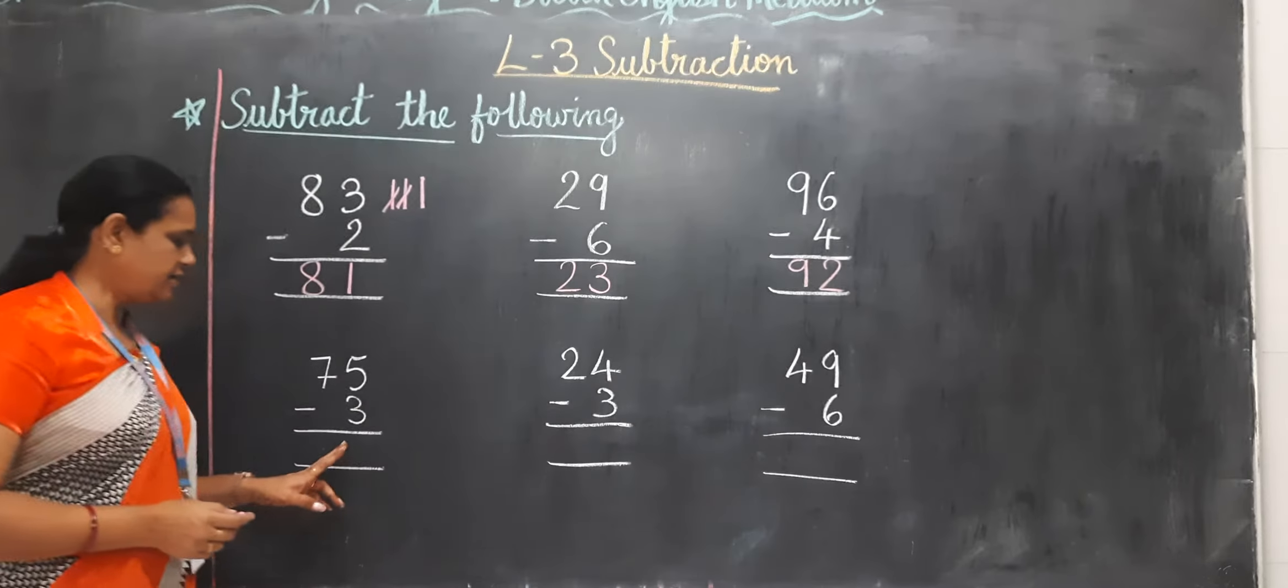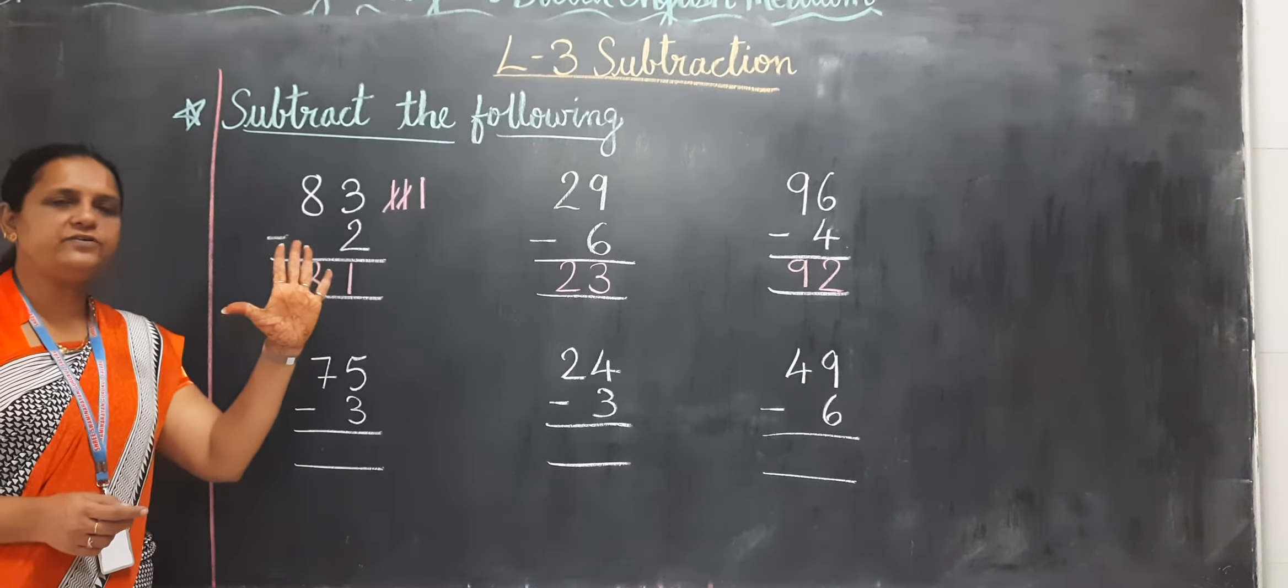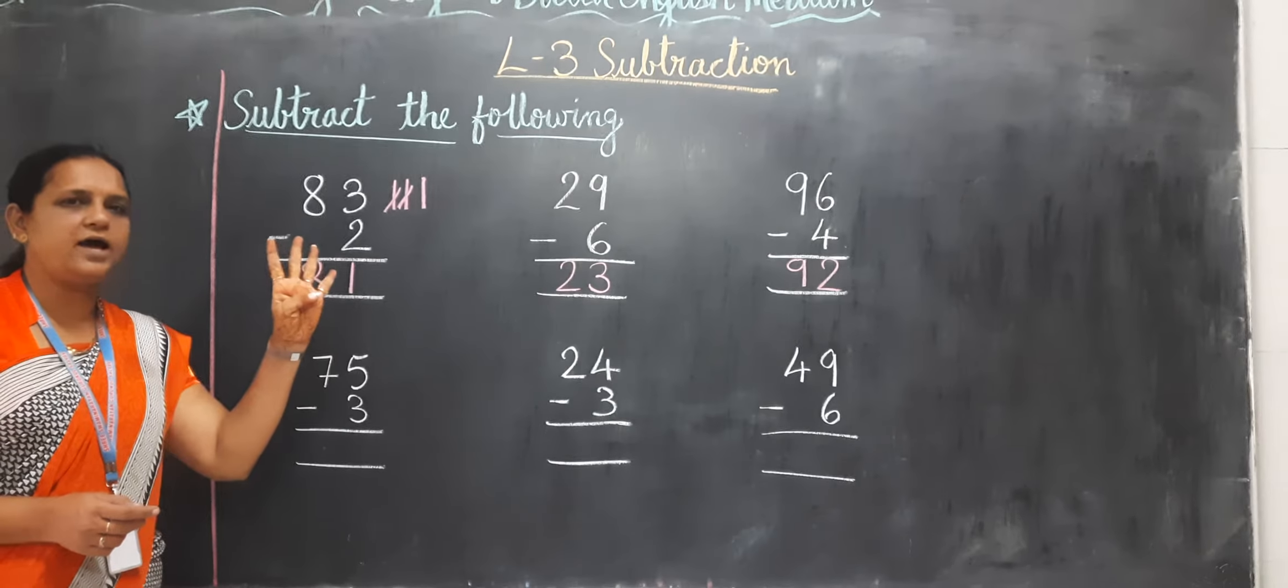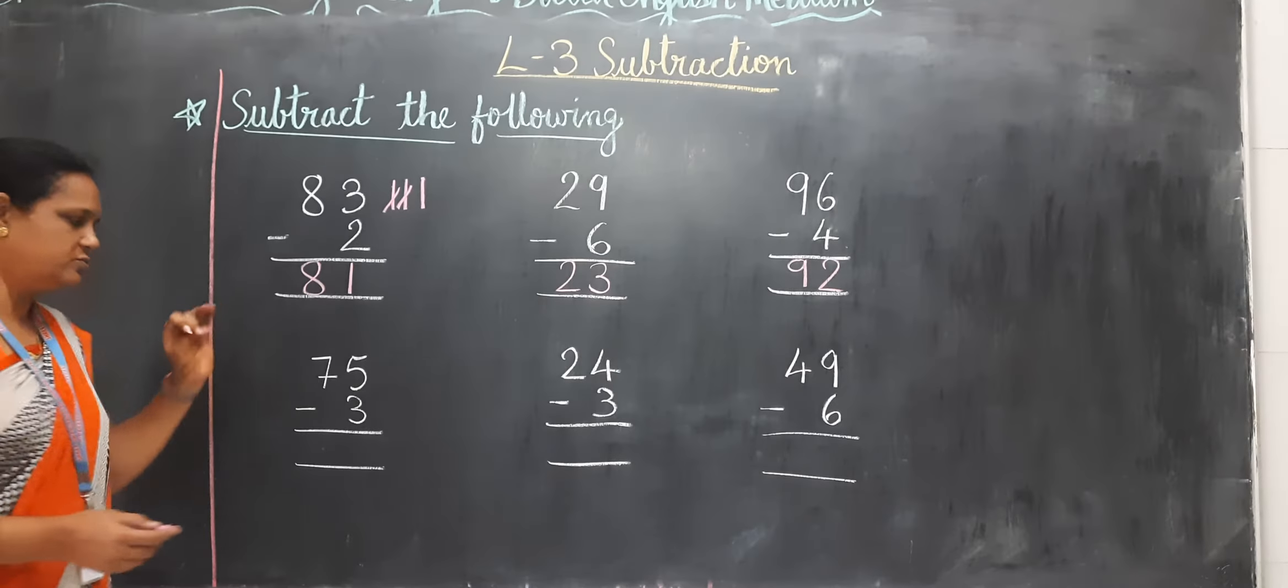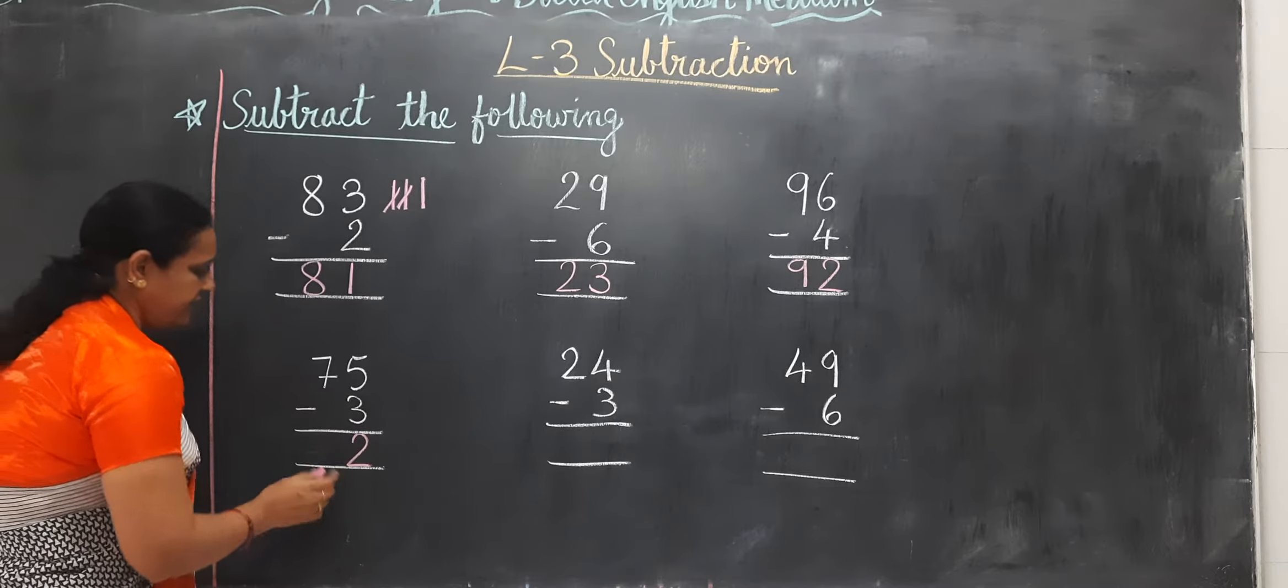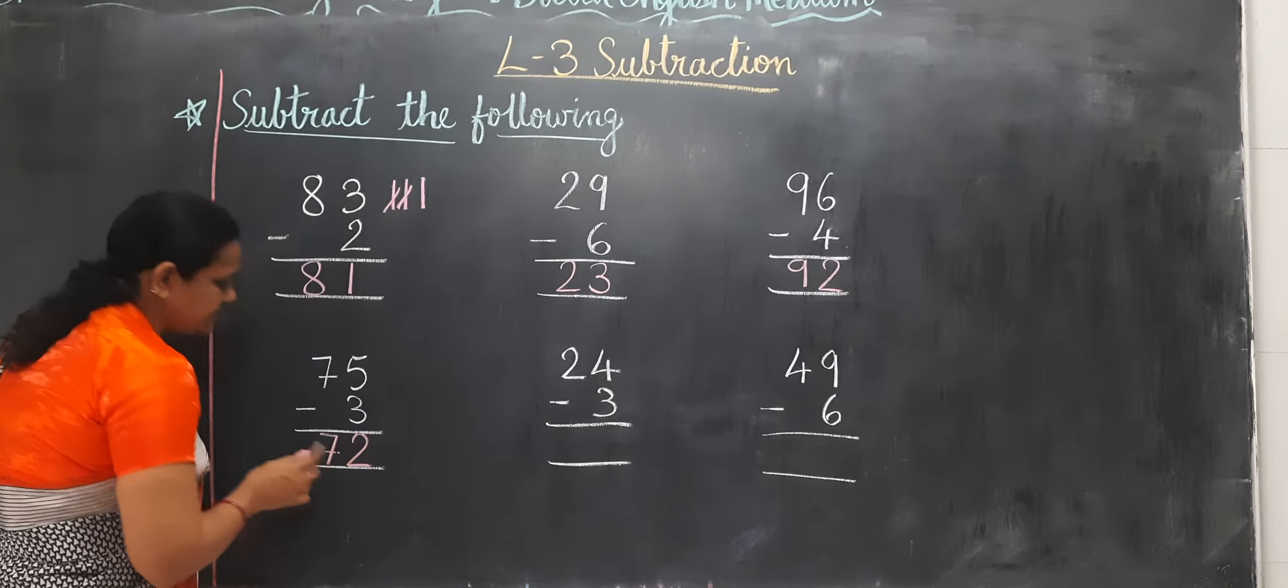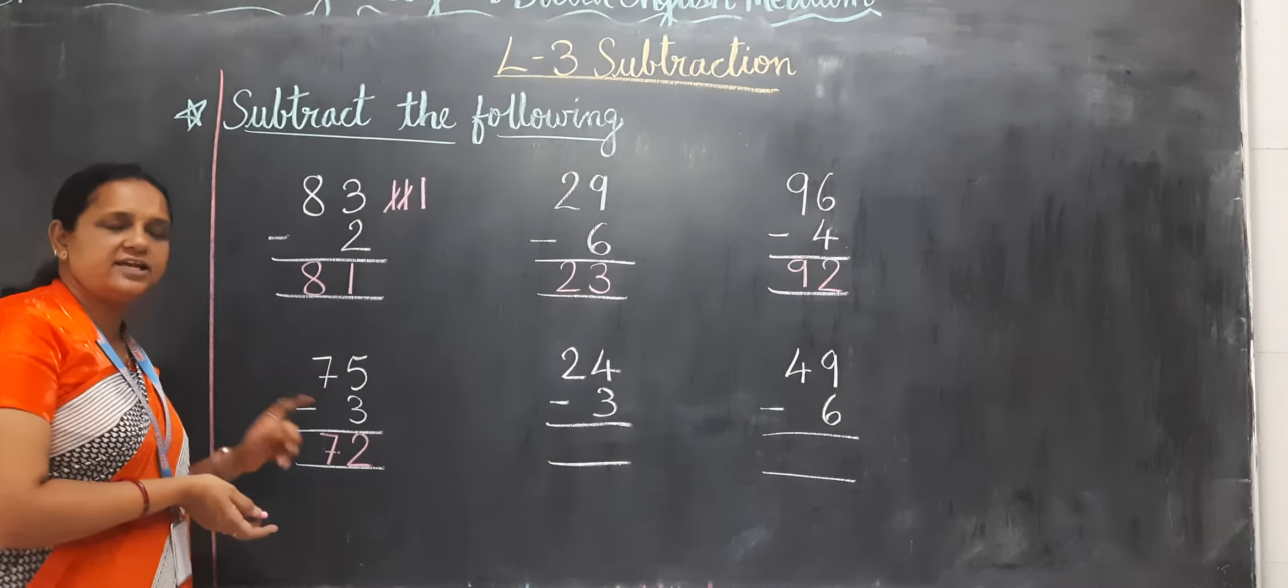Now next 5 minus 3. Take 5 fingers and cut 3. 1, 2, 3. Now how many? 2. How many fingers remain? 2. 7. You have to put direct 7 because here no number is there to cut.